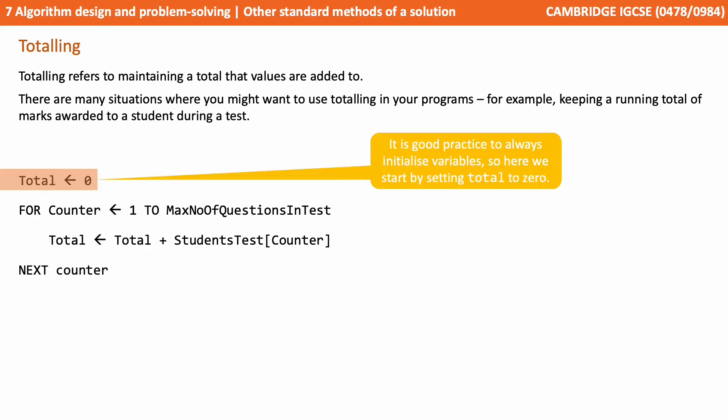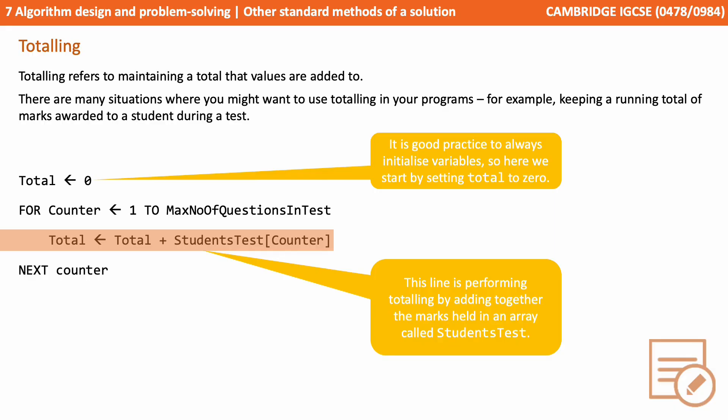So here in the pseudocode we can see it's always good practice to initialize variables. So we're going to start by setting total to zero. Then inside our for loop this is the line that's actually performing the totalling by adding together the marks which are held in the array called students test.